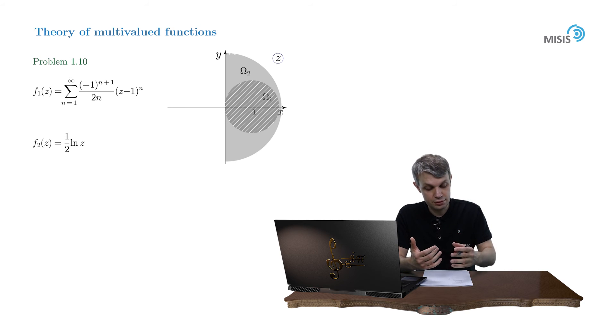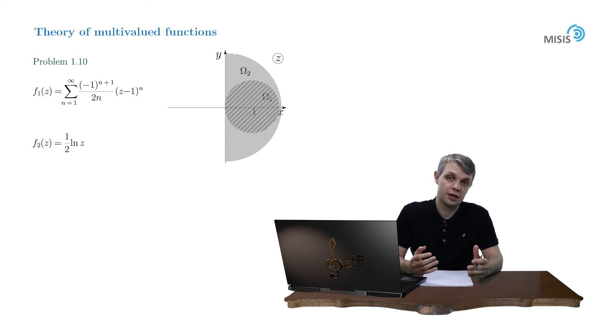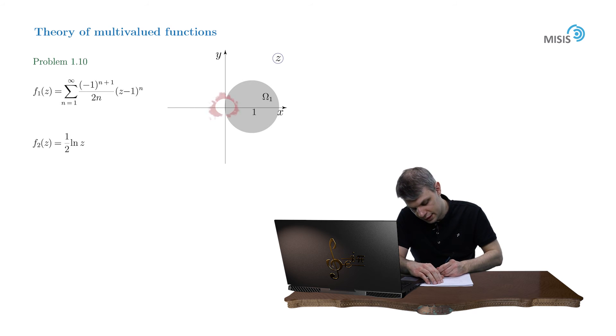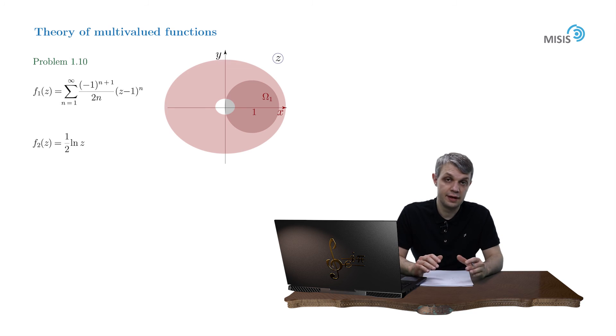That means that f₂ is an analytic continuation of f₁ on the right complex semi-plane. And as we now understand from the theorem which we discussed, the analytic continuation of f₁ to a larger domain Ω₂ is unique. It's just one half of logarithm of z, where the regular branch of complex logarithm is specified in such a way that f₂ of 1 is equal to 0. But can we go further and build an analytic continuation to a different region, like this?